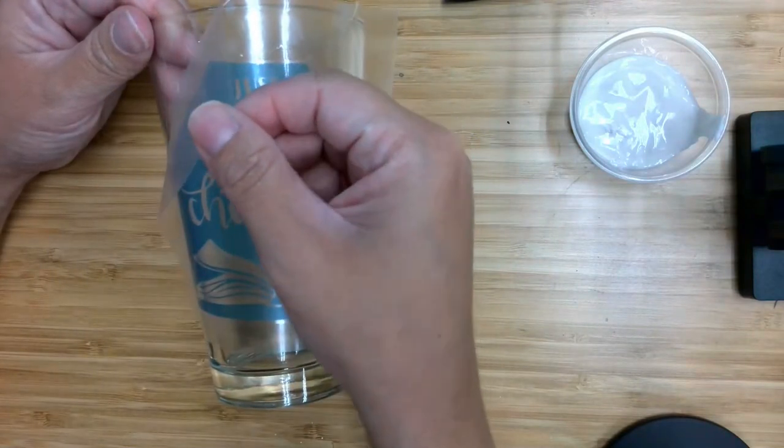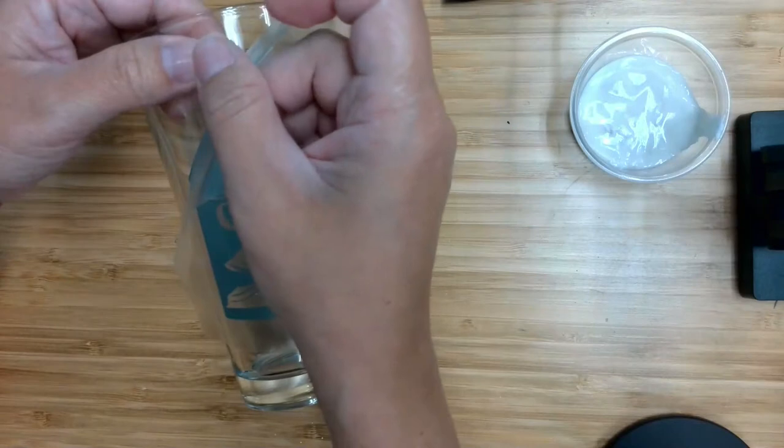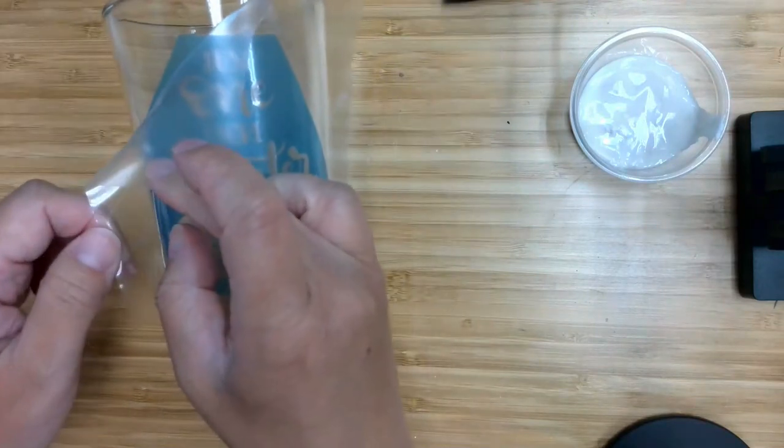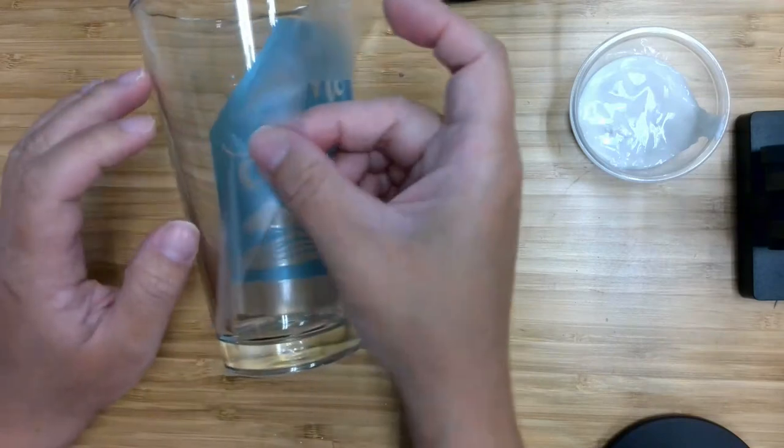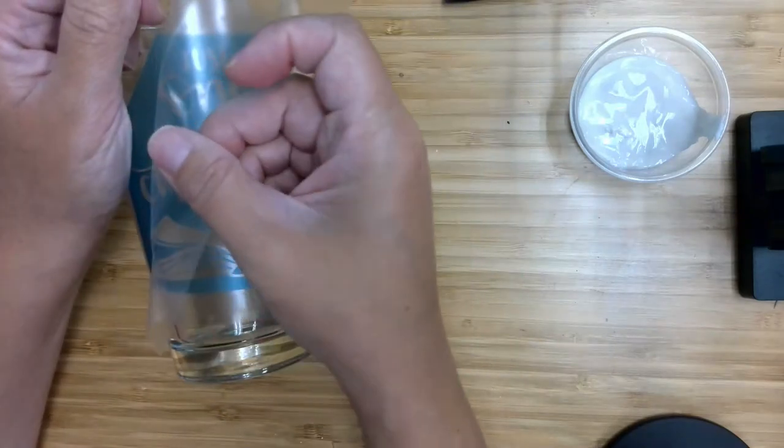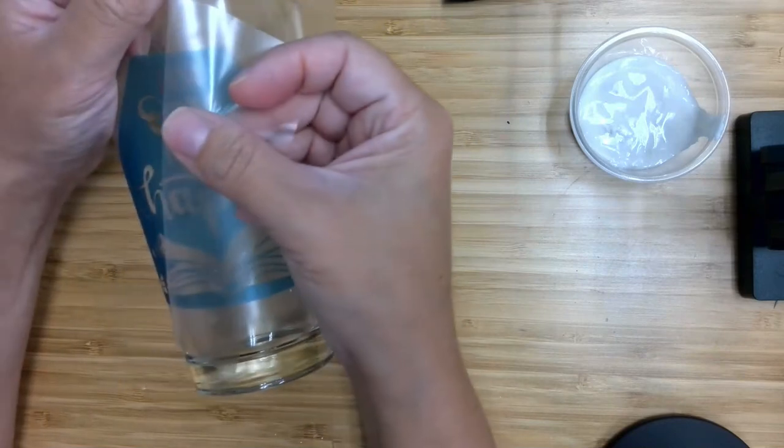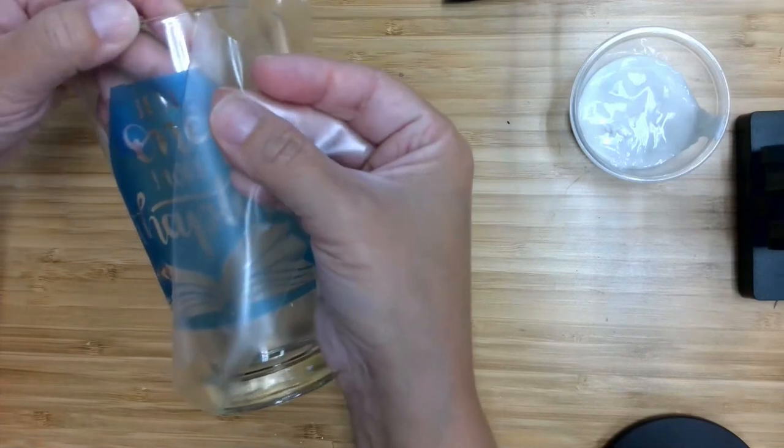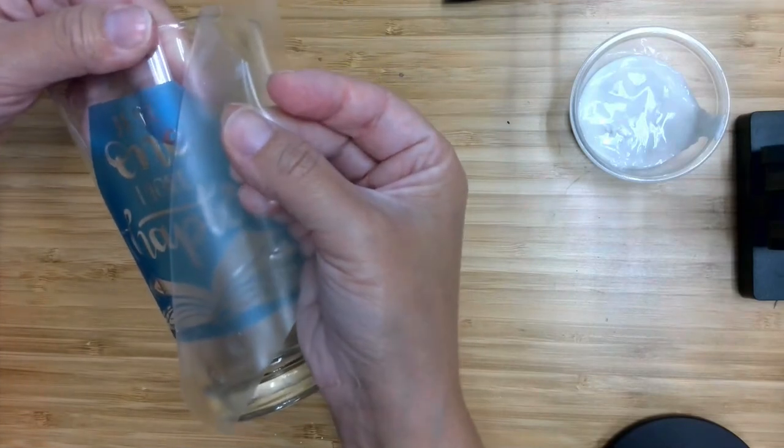And now you're going to peel away this transfer paper, and you want all the blue to be left behind. And you don't want to touch anything in here, so just keep your hands away from that area.